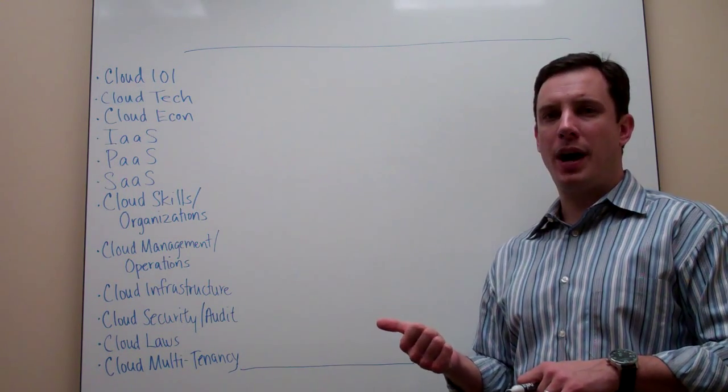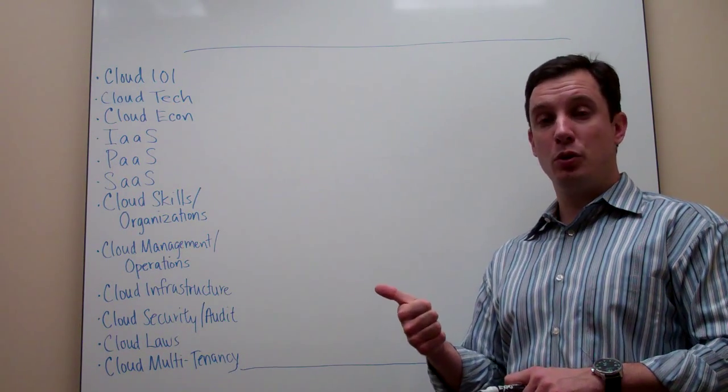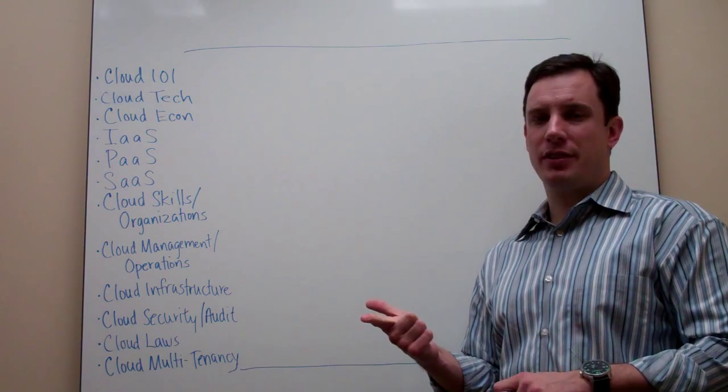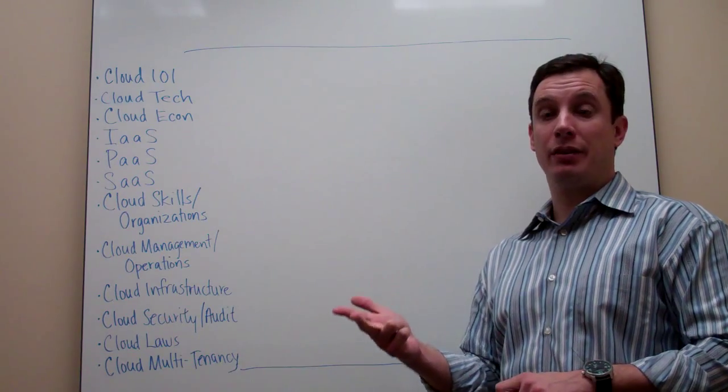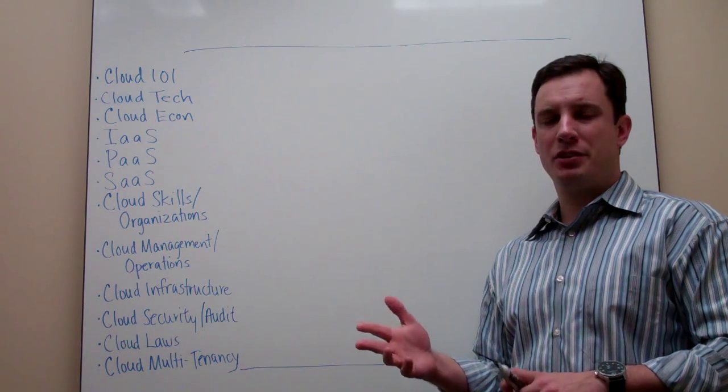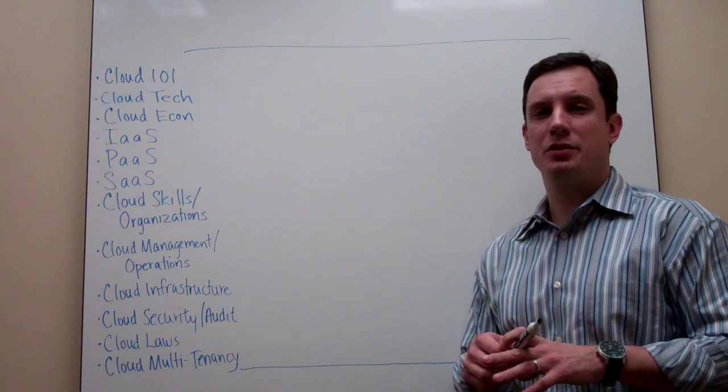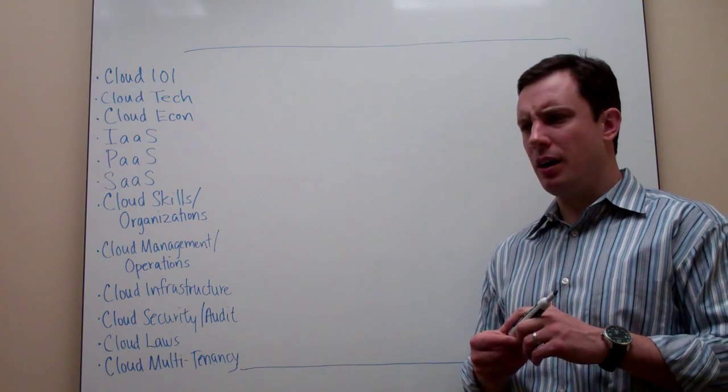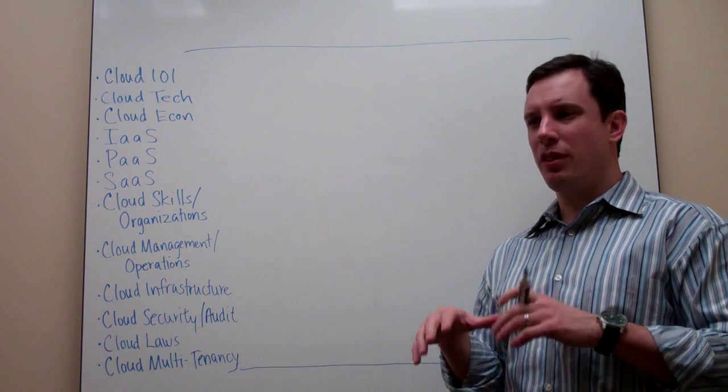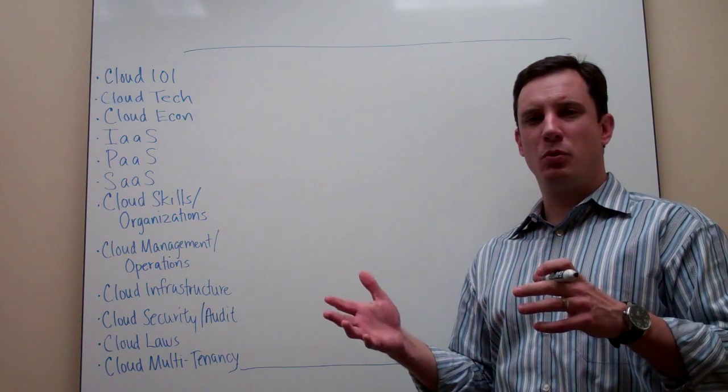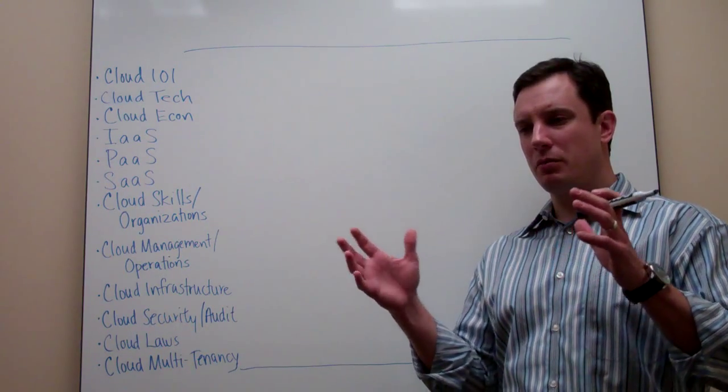Some of the more popular Platform as a Service are Google App Engine, GAE. Microsoft has one called Azure. VMware has one called Cloud Foundry. Salesforce.com has something called Heroku. Red Hat has one called OpenShift. There's one called Cloud Bees. Engine Yard makes one. A bunch of different Platform as a Service.